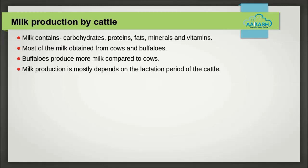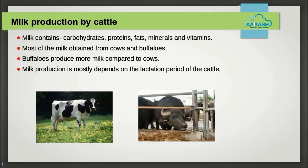Milk production is highly nutritious because of the presence of all major nutrients like carbohydrates, proteins, fat, minerals, and vitamins. Most milk is obtained from cows and buffaloes. Milk produced by buffaloes is much higher in quantity and richer in nutrients compared to cows. Milk production from cattle mostly depends on the lactation period, so milk production can be increased by increasing the lactation period.